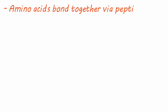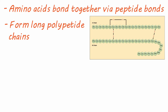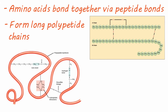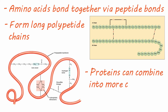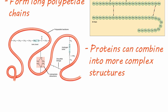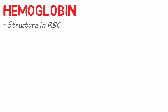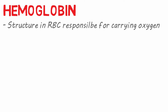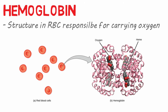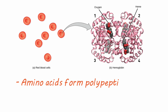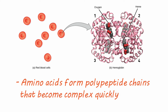These amino acids bond with each other through a peptide bond and form long chains referred to as polypeptide chains. These chains then fold and bond with themselves to form a complete protein, and sometimes they combine with other proteins to make a more complex protein structure. Hemoglobin is a great example — it is the structure in red blood cells responsible for carrying oxygen to the cells, made of four globin protein subunits each with an iron-containing heme group. In other words, amino acids form polypeptide chains that can become complex very quickly.